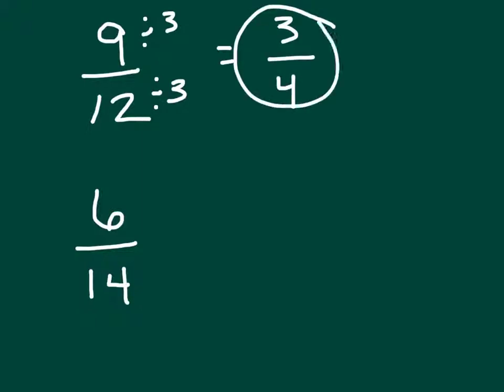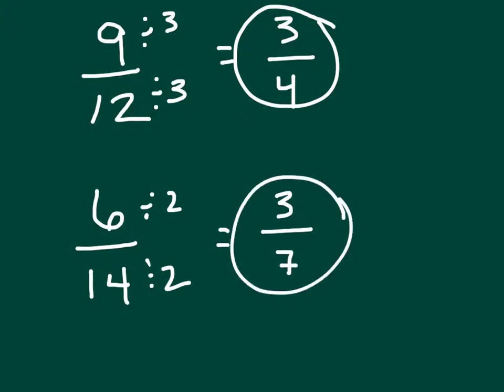so this reduces to 3 fourths. On the bottom fraction, I know that I can reduce by 2. It's an even number, you can always reduce by 2. 6 divided by 2 is 3, 14 divided by 2 is 7, so this fraction reduces to 3 sevenths.